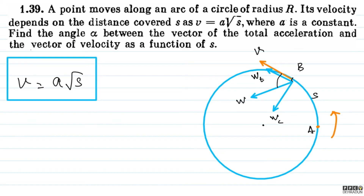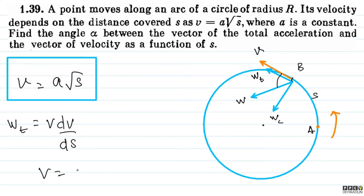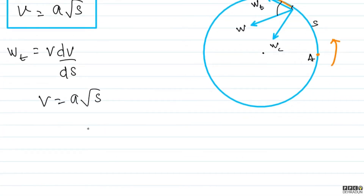So first of all, we will calculate tangential acceleration, which is v·dv/ds. Here we know V. V is a√s. Now differentiate: dv/ds comes out to a/(2√s). So basically, dv/ds = a/2√s.